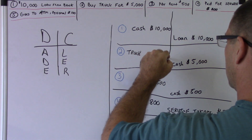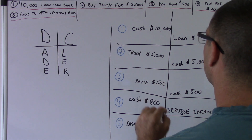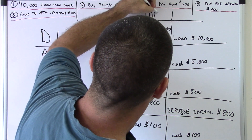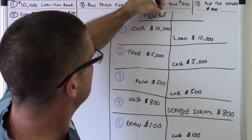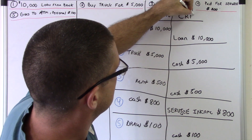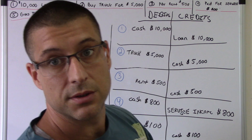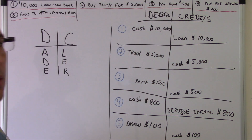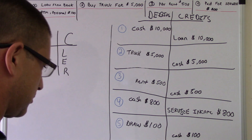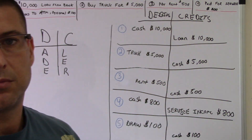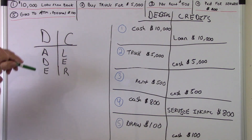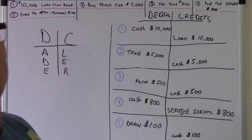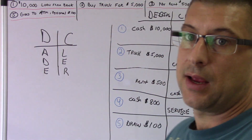I'm going to put a line down here. We're going to have debits on this side and credits on the right side. That's pretty much all the journal entry is doing — separating the debits and the credits. Now we're going to go through each journal entry and label them: asset, draw or distribution, expense, liability, equity, or revenue.